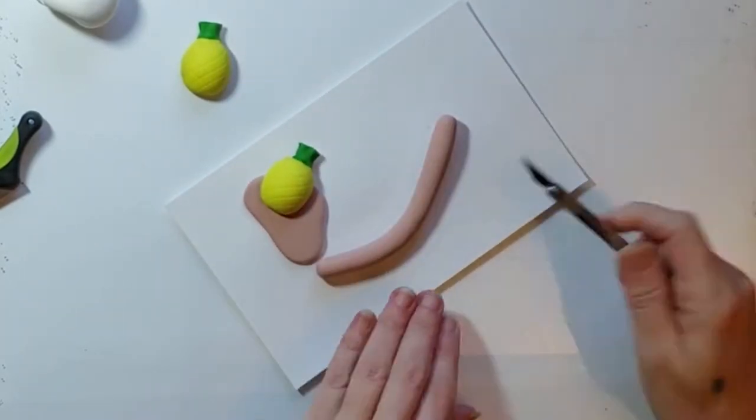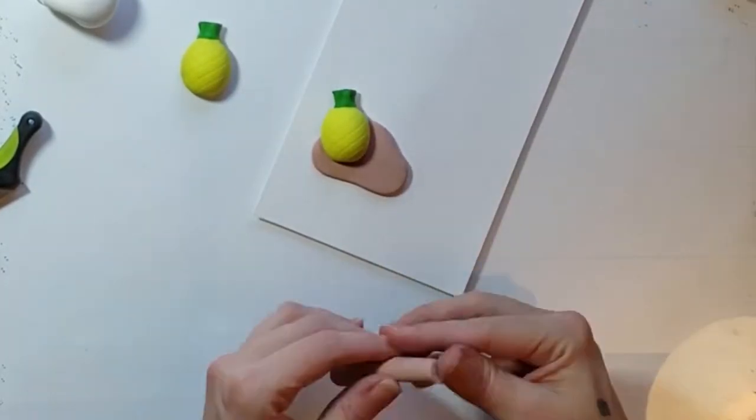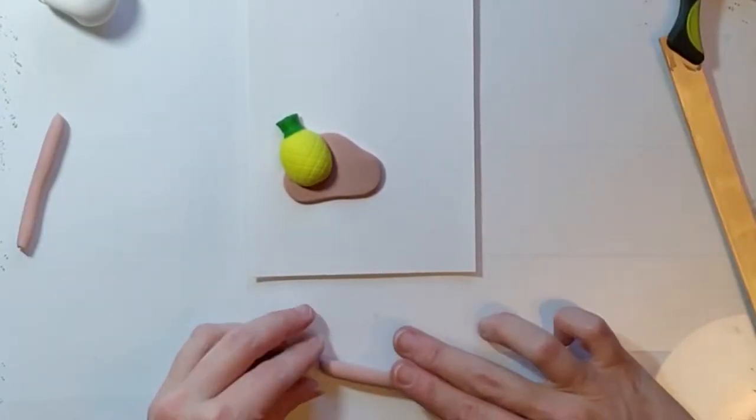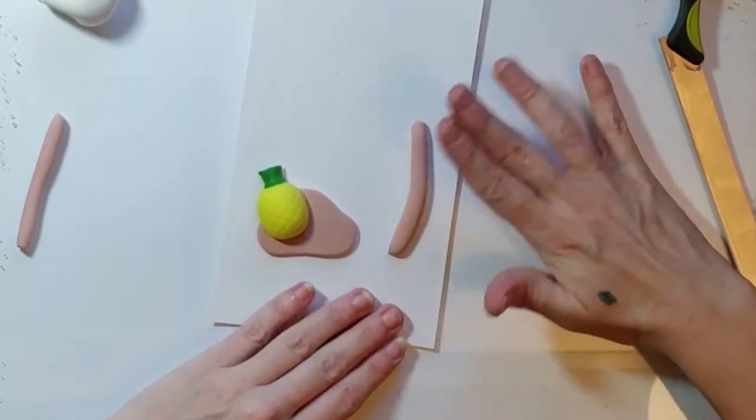I snaked out a roll of the beige clay to make the trunk of the palm tree and I noticed that as I was cutting this rather than cutting clean it would pull. My exacto knife would just drag through it so I ended up just using my scissors on it which worked really well.